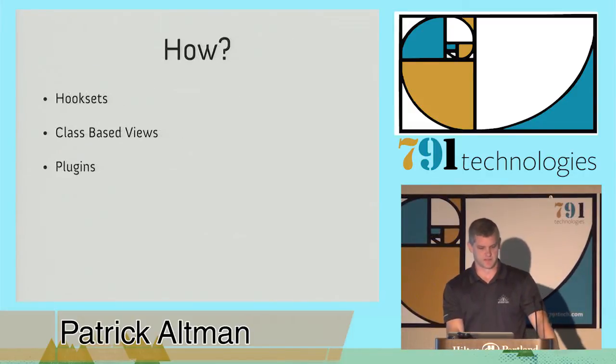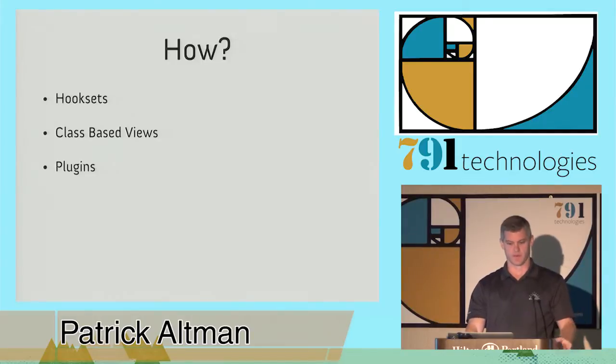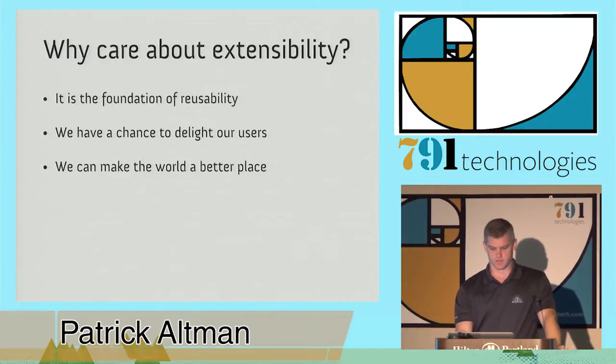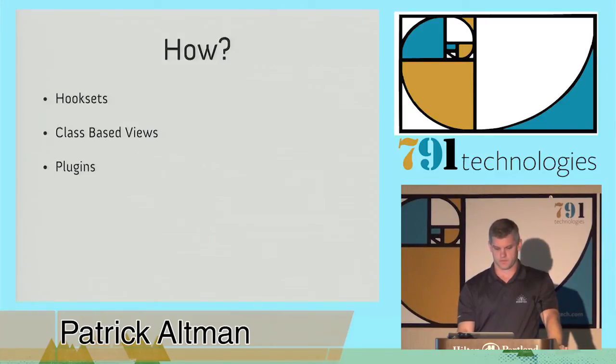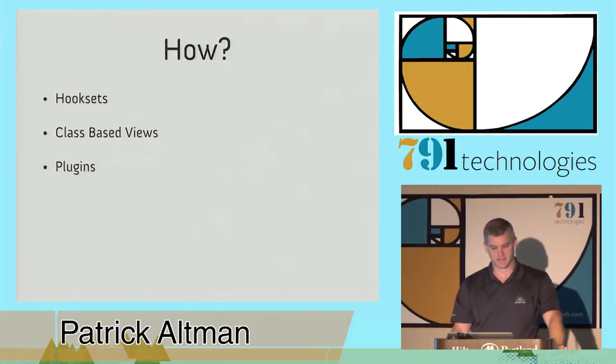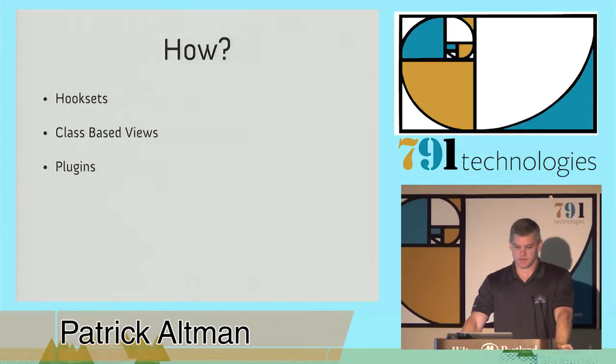Just how do we go about creating extensibility? There's a lot of different ways, but I want to focus just on three today. The first is what we call hook sets. This is a term coined by Brian Rosner. He created hook sets in Django user accounts, driven by a client need where signals didn't quite support the requirement. It's simply a class with methods that can be overridden at the site level.